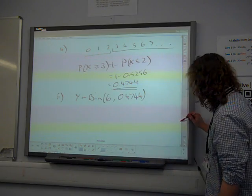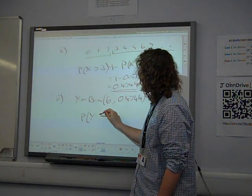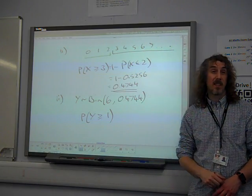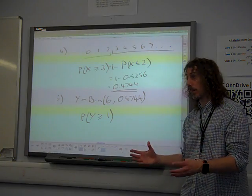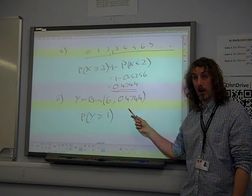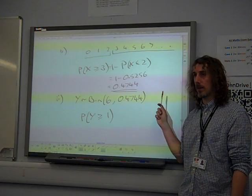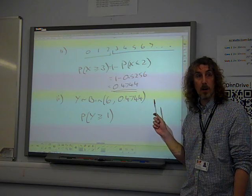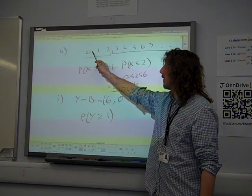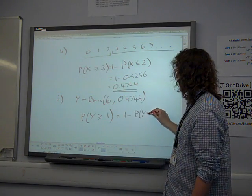And now we're looking for there being at least one. So the probability that Y is greater than or equal to one. Well obviously there's not going to be a binomial probability table that has 0.4744 as one of the columns, so we can't use the tables anymore. So calculating all of these greater than or equal to one probabilities is quite hard work. But greater than or equal to one is the opposite of zero. So that is one minus the probability that Y is zero.